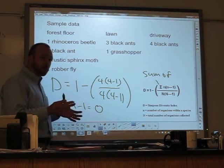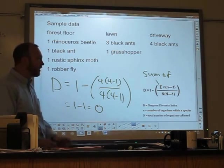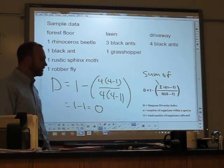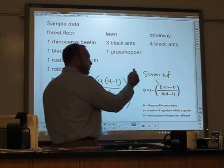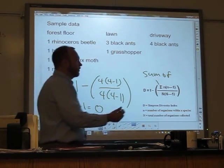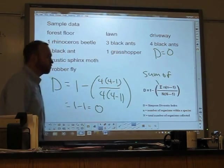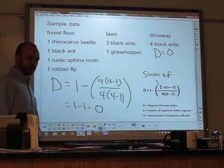So what I have here, in essence, is one minus one, which is zero. Which is telling me exactly what we can already see, that there's no biodiversity here in the driveway. Every insect is the same kind of insect. So with my very simplified sample here, the biodiversity is zero. Does that make sense?